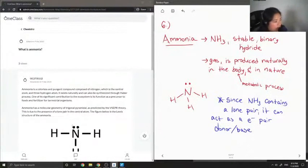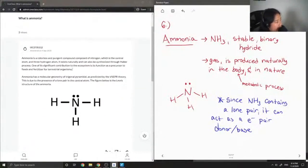So let's see what our junior tutor said. Ammonia is a colorless and pungent compound composed of nitrogen, which is the central atom, and three hydrogen atoms. It exists naturally and can also be synthesized through Haber process. One of its significant contributions to the ecosystem is its function as a precursor to foods and fertilizer for terrestrial organisms. That's a nice fact.